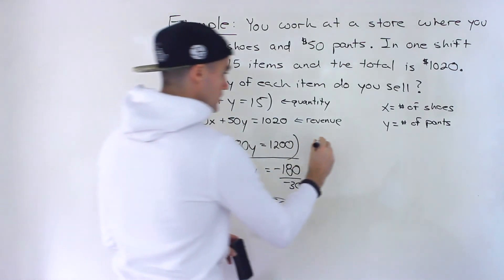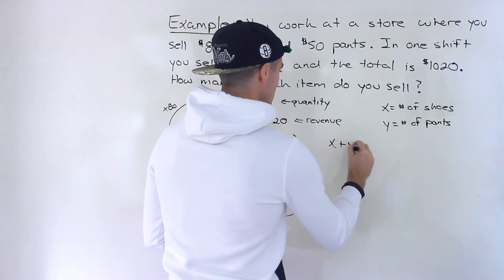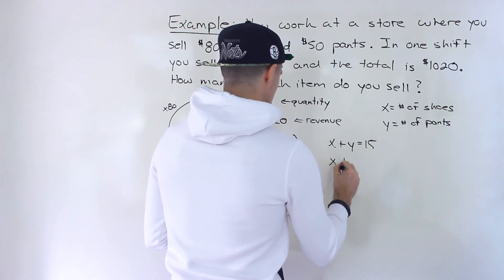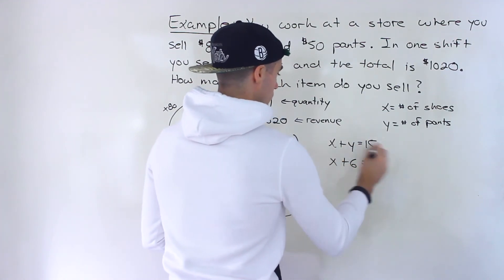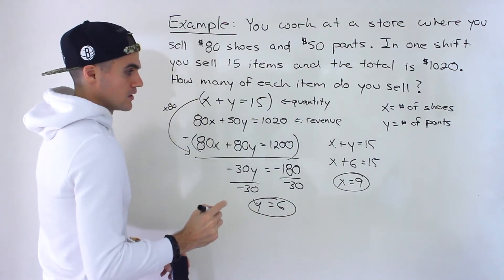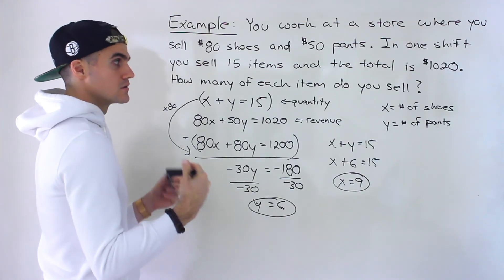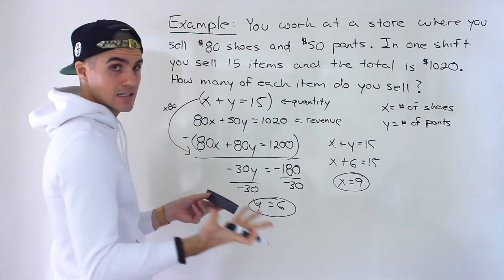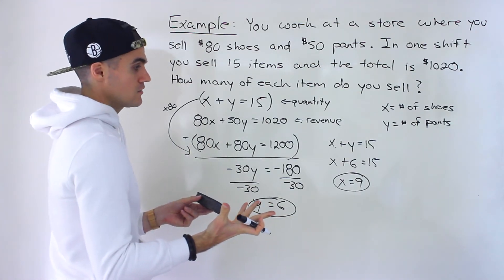So let's rewrite that. If we plug in 6 for y, bring this over, x is equal to 9. So you sell 9 shoes and then you sell 6 pants. And those are the answers.